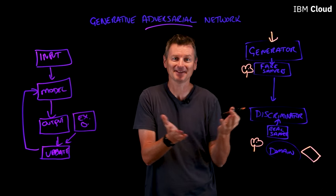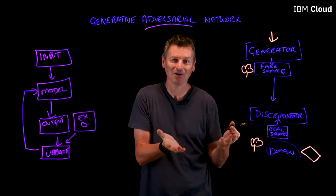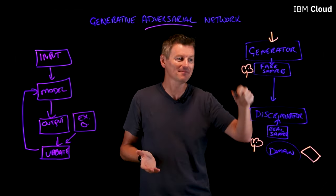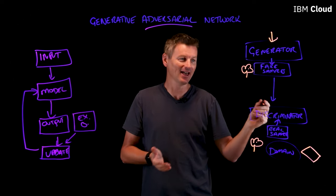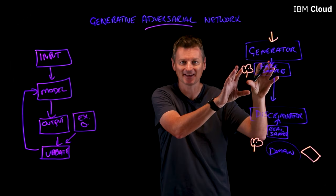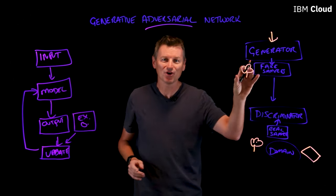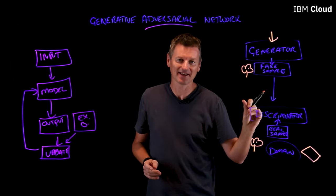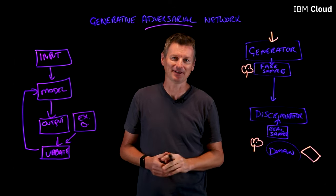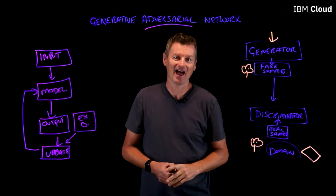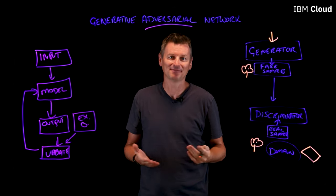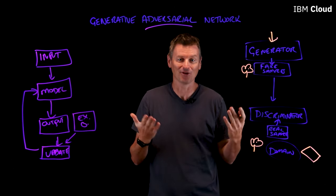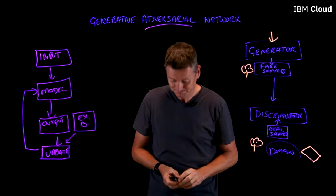That's basically how these things work. We go through many, many iterations of this until the Generator gets so good that the Discriminator can no longer pick out its fakes, and there we have built a very successful Generator to do whatever it is we wanted it to do.